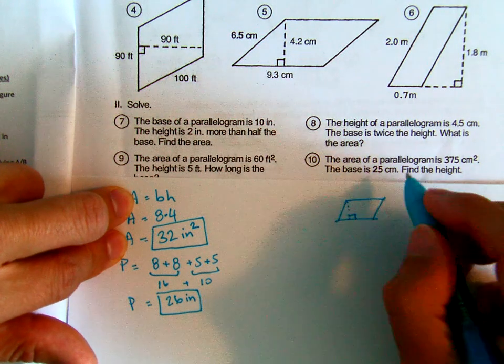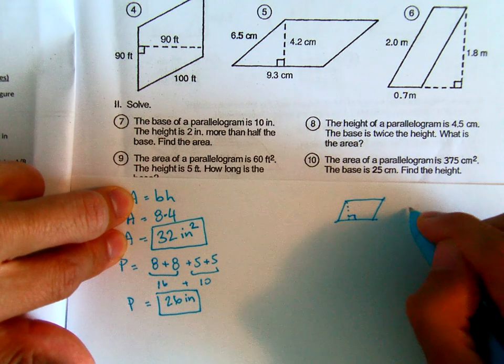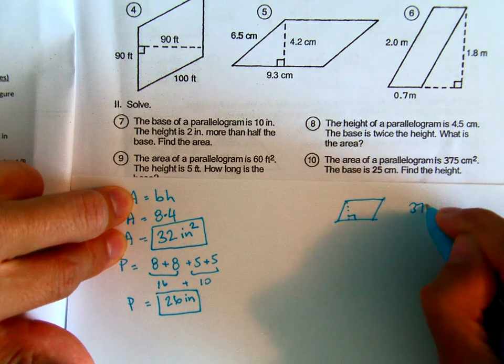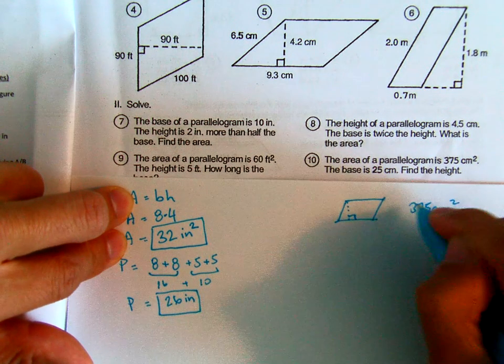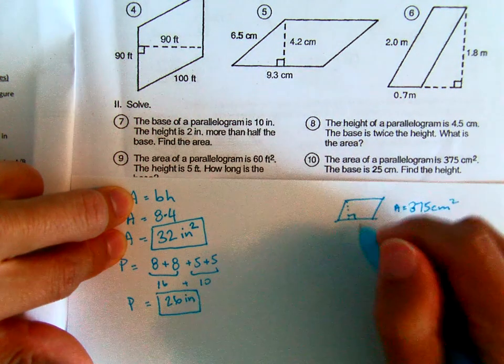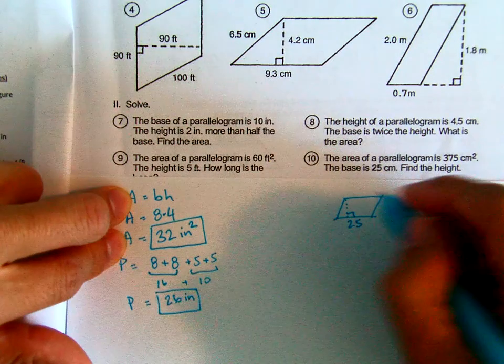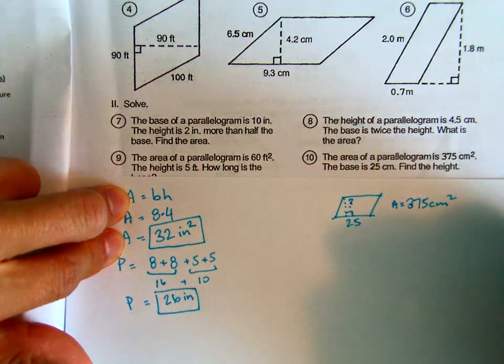And it says the area is 375. So the whole thing is 375 centimeters squared, and that's the area. And they said the base is 25. So the bottom is going to be 25. And they don't know what the height is. So the height is question mark.